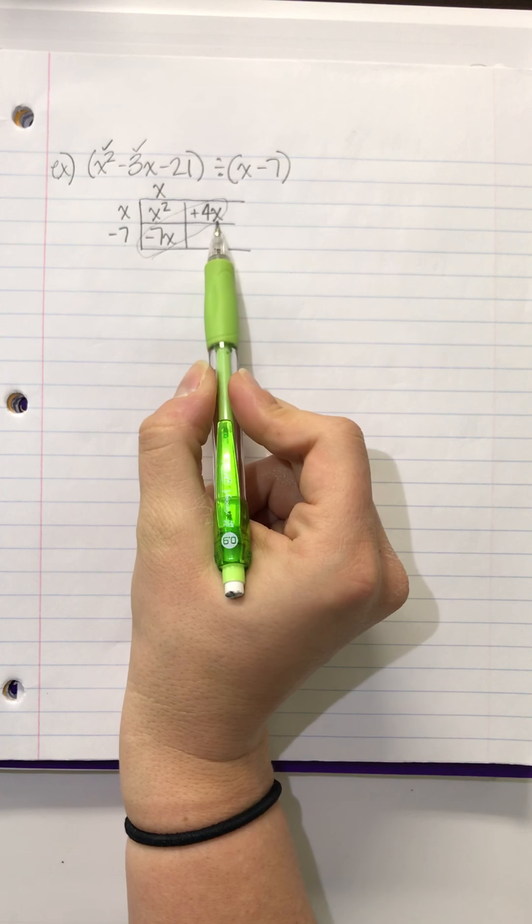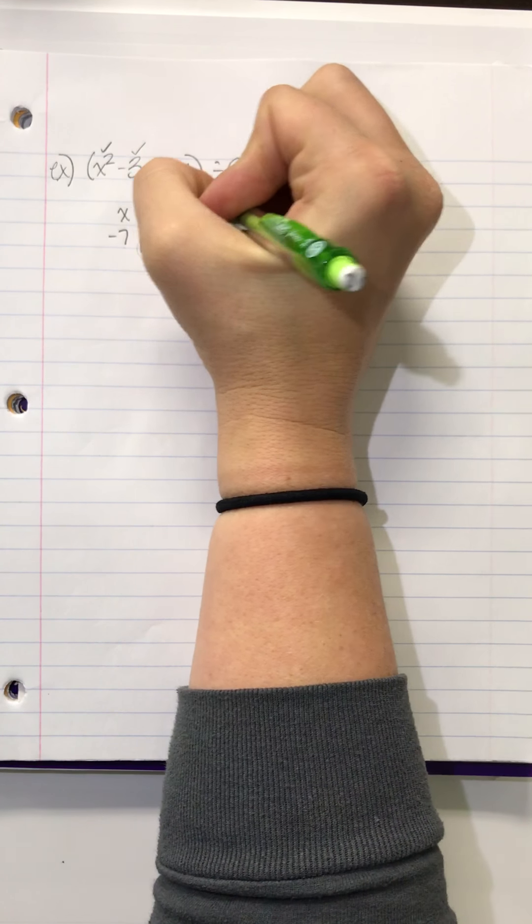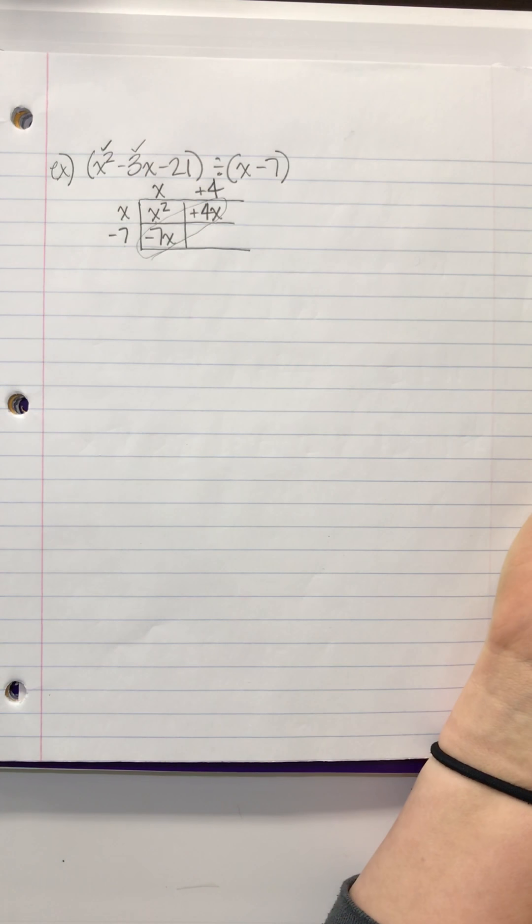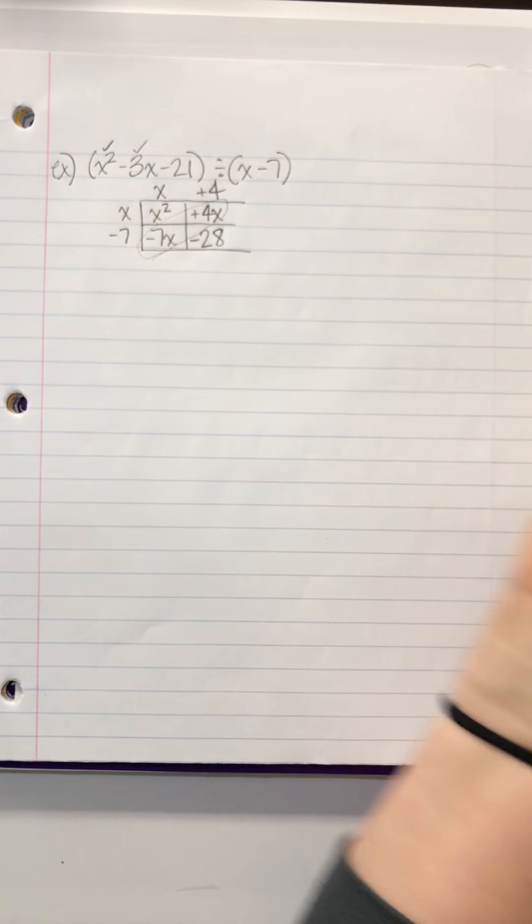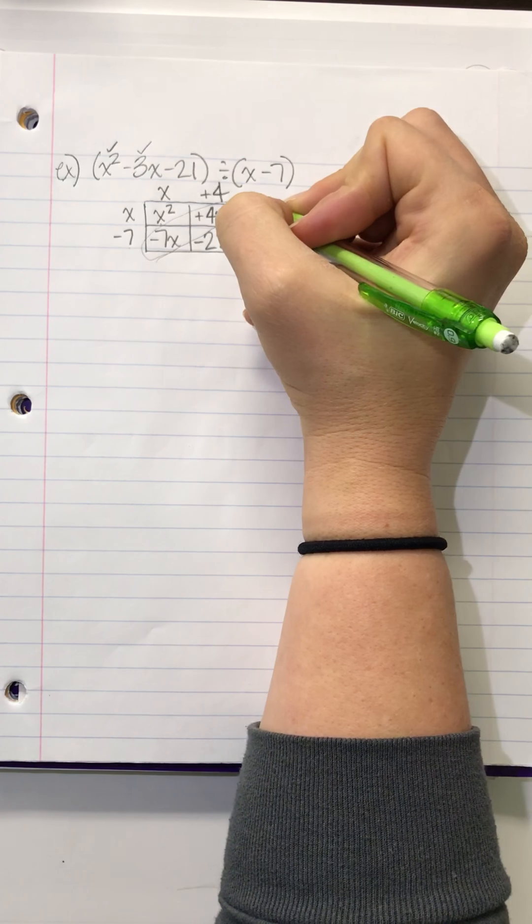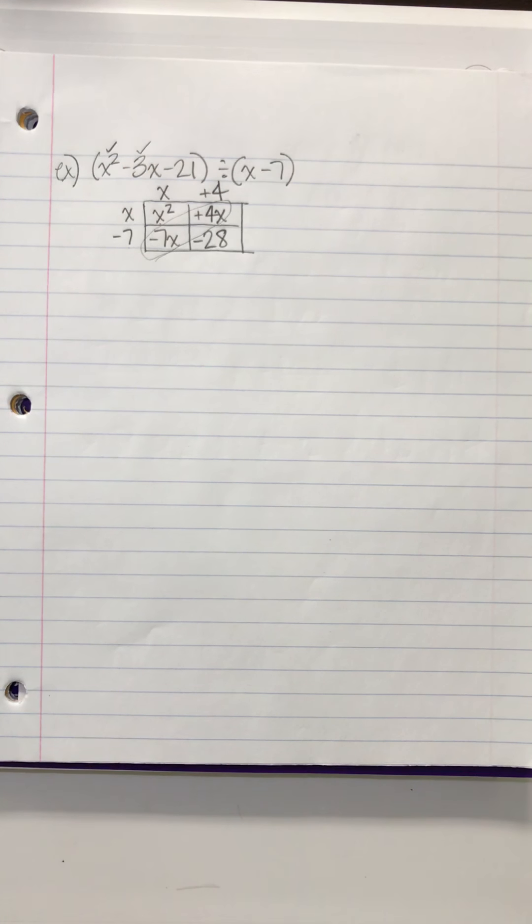Well, how do I turn an x into a 4x? With a positive 4. And 4 times negative 7 is negative 28, which is not what I want. Would that be the remainder? No. The remainder is negative 7. How did you get negative 7?